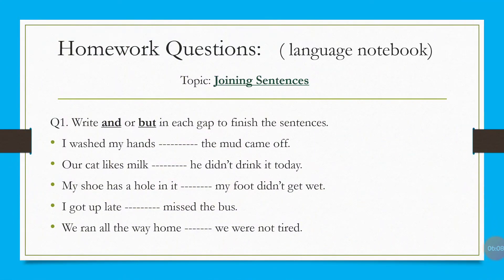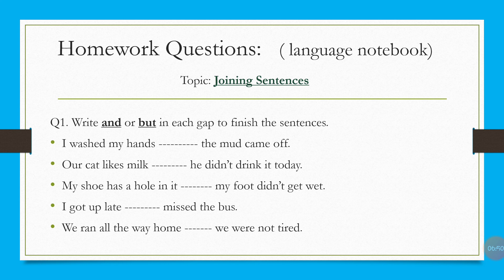Now come to the homework. After writing the day, date, and 'Homework', write the topic: 'Joining Sentences'. The question is: write 'and' or 'but' in each gap to finish the sentences. Sentence one: 'I washed my hands ___ the mud came off.' Sentence two: 'Our cat likes milk ___ he didn't drink it today.' Sentence three: 'My shoe has a hole in it ___ my foot didn't get wet.' Sentence four: 'I got up late ___ missed the bus.' The last sentence: 'We ran all the way home ___ we were not tired.' You will do this work in your language notebook, or on a loose sheet if your notebook is finished.